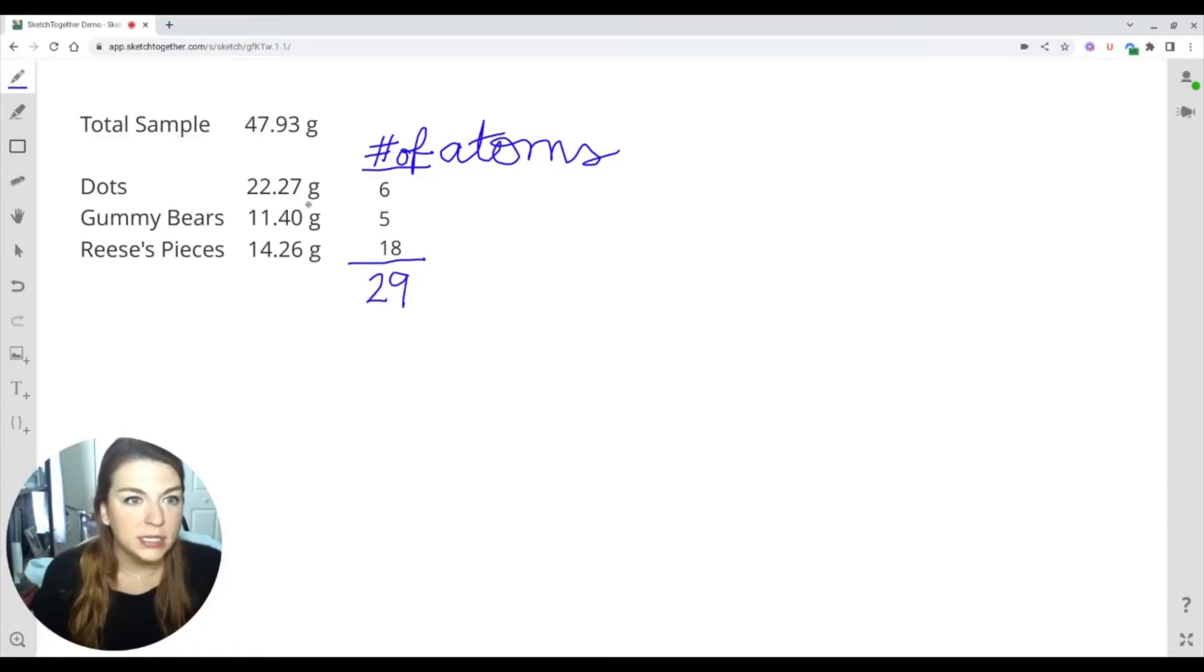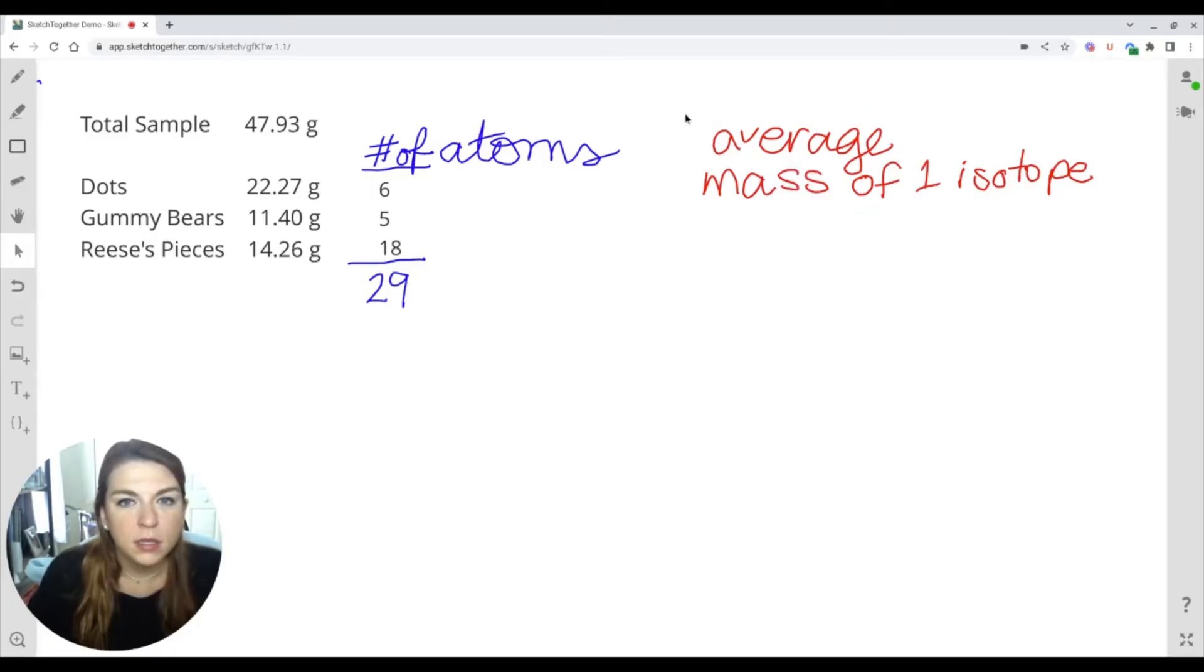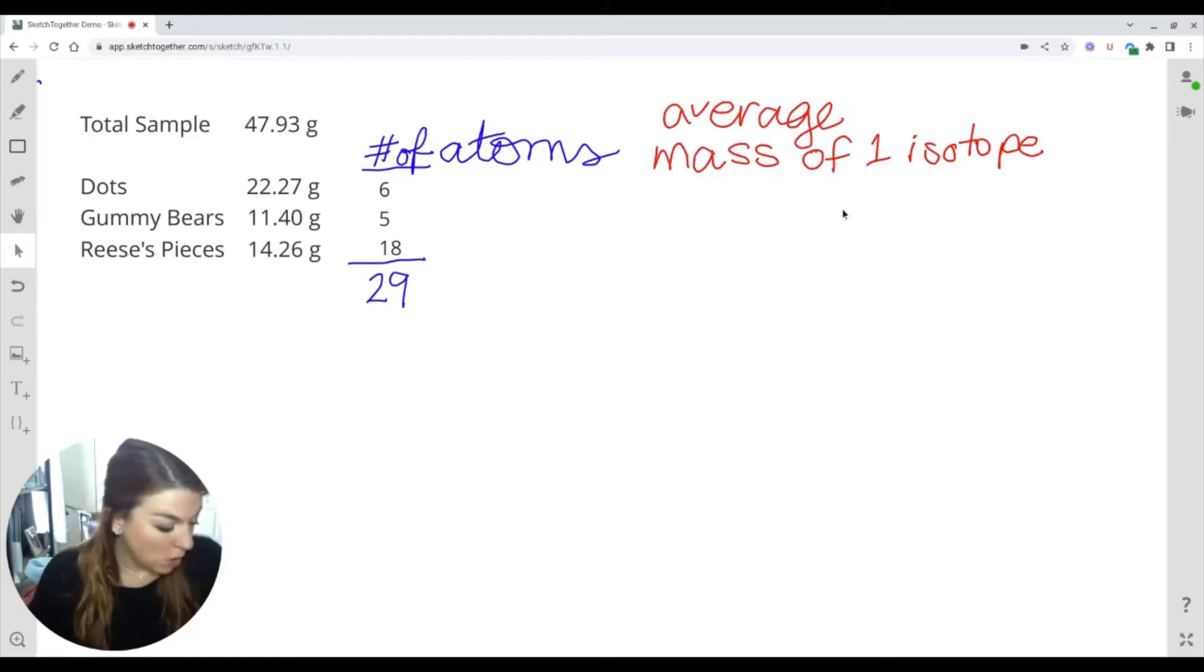Okay, so the average mass of a dot is going to be the 22.27 divided by the six atoms that we have. So the average mass of one isotope is going to be the total mass divided by the quantity that we have. So we would do 22.27 divided by 6, tells me that the average dot has a mass of 3.71 grams. The average gummy bear is 11.40 divided by the 5, and that gives me 2.28 grams. And then finally, the Reese's Pieces is 14.26 divided by 18, and that gives us 0.79 grams.